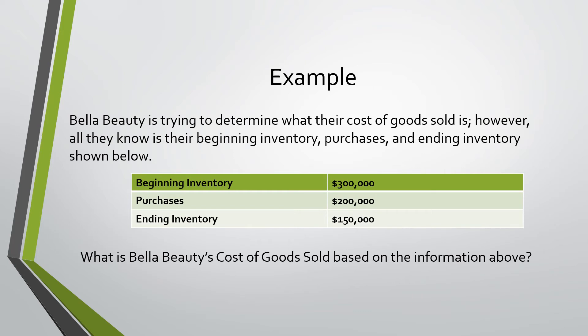In the next example, Bella Beauty is trying to determine what their cost of goods sold is. However, all they know is their beginning inventory, purchases, and ending inventory. Their beginning inventory, again, is $300,000, while their purchases are $200,000.